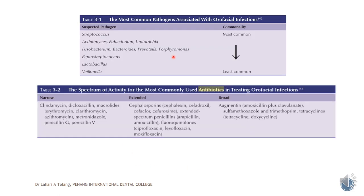The most common pathogen associated with orofacial infection, taken from Burkitt's, is Streptococcus, followed by Actinomycetes and Fusobacterium, with Veillonella being the least common. Regarding spectrum of activity for antibiotics in orofacial infections: the narrow spectrum ones include clindamycin and erythromycin under macrolides; cephalosporins are extended spectrum; and broad spectrum is augmentin. Reserve broad spectrum only when you really need them. Simple penicillin and erythromycin are more than enough to clear usual infections. Amoxicillin comes under extended spectrum penicillin and is one of the preferred antibiotics in dental infections.